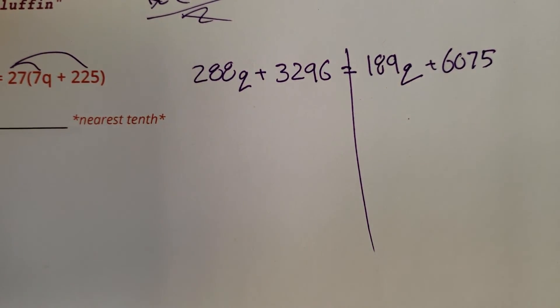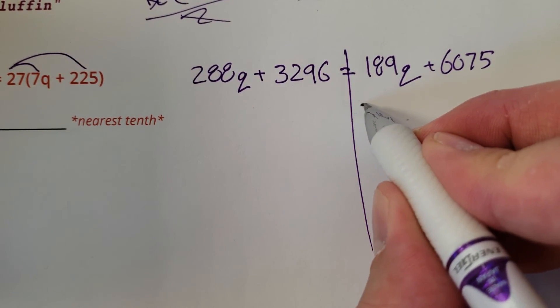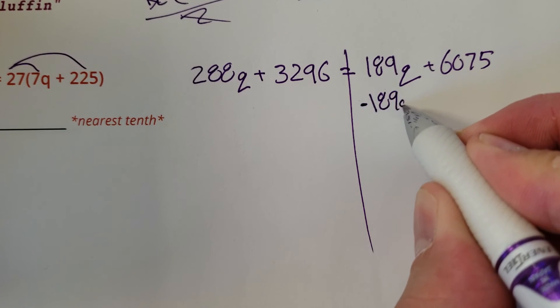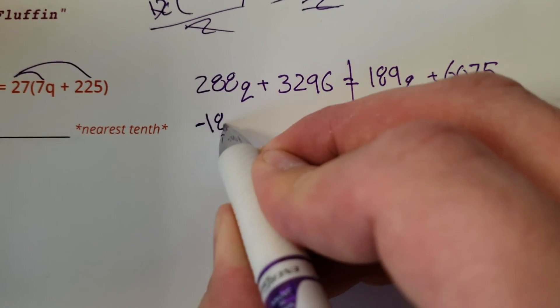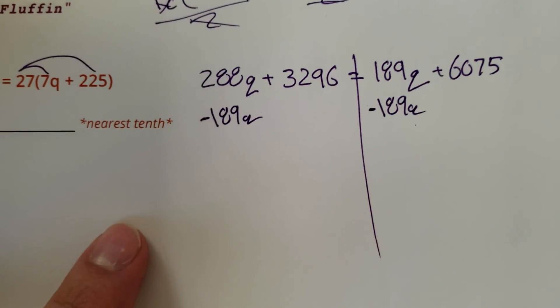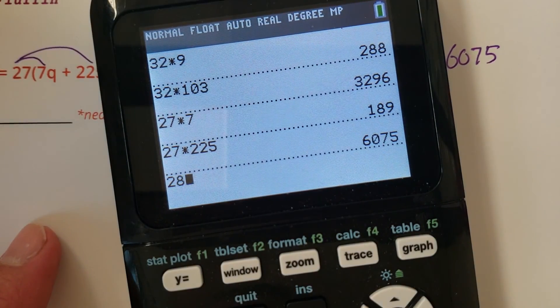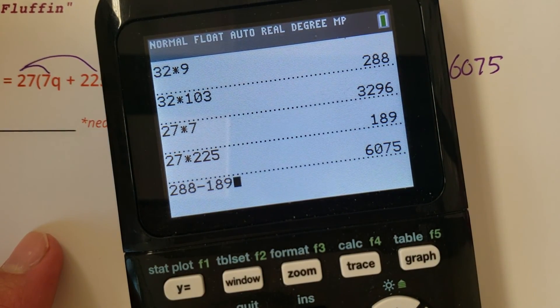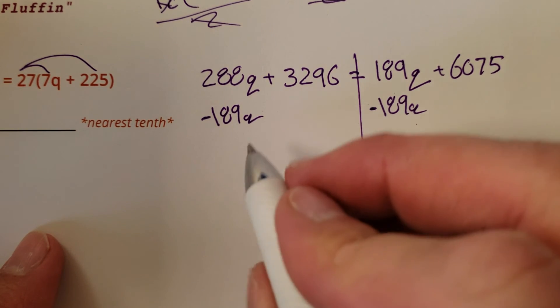Alright. Making it work with some big numbers here. Big whoop. Minus 189Q, minus 189Q. So we have 288 minus 189, which is 99Q. Nice.